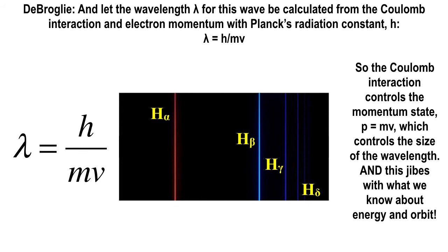De Broglie said this perfectly explains the spectrum of hydrogen — H alpha, H beta, H gamma, H delta. Those wavelengths are controlled by the energy and momentum of the electron, which is controlled by the Coulomb interaction. The Coulomb interaction is characterized by the charge of the nucleus and the charge on the electron — a pairwise interaction between electron and nucleus.